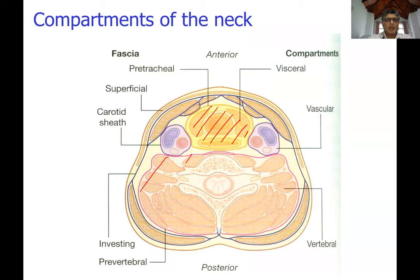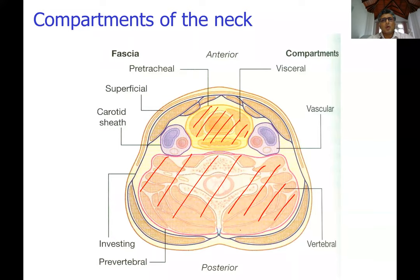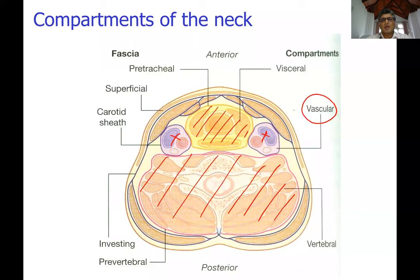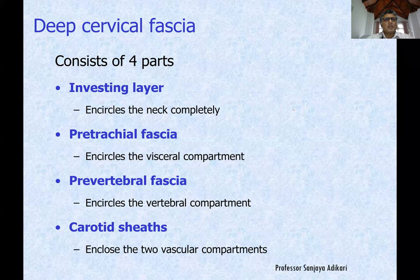Behind the visceral compartment is the vertebral compartment. On either side, in front of the vertebral compartment and on either side of the visceral compartment, are the carotid sheaths — also called vascular compartments — which contain the vessels and the vagus nerve.